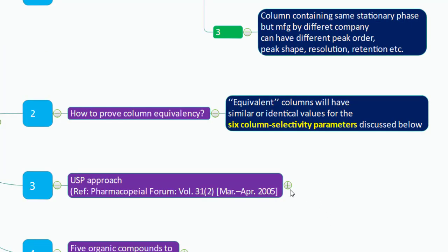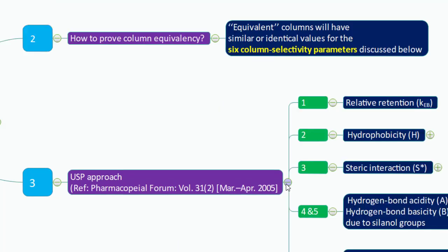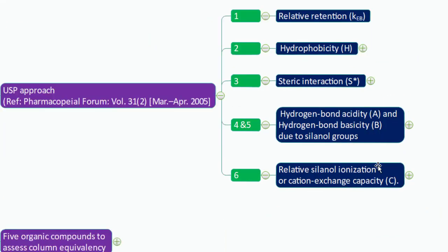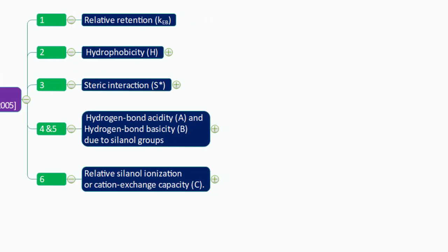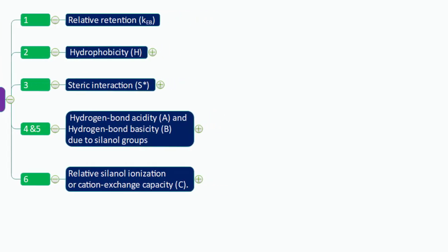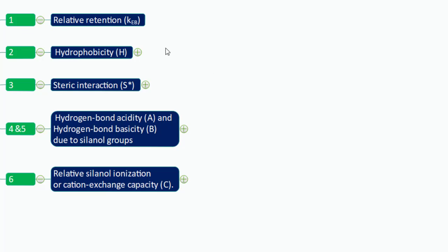The USP approach references the Stimuli article in the Pharmacopeial Forum, volume 31, number 2. According to this article, the six important parameters are: relative retention, hydrophobicity, steric interaction, hydrogen bond acidity, hydrogen bond basicity due to silanol groups, and relative silanol ionization or cation exchange capacity.